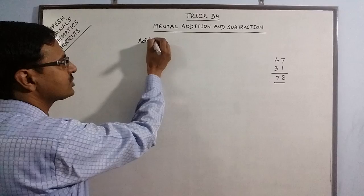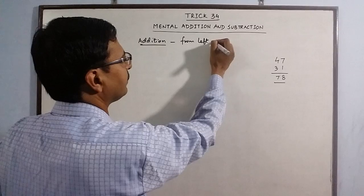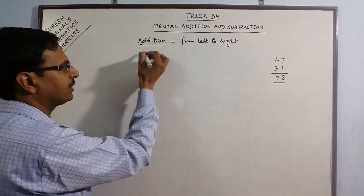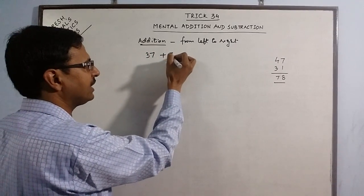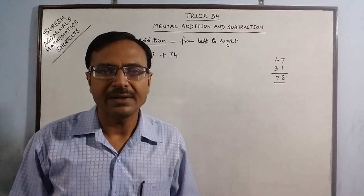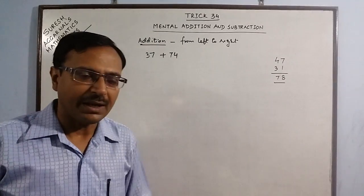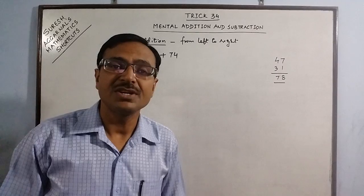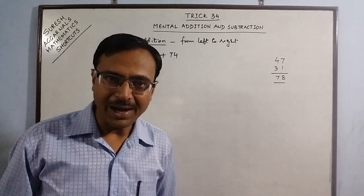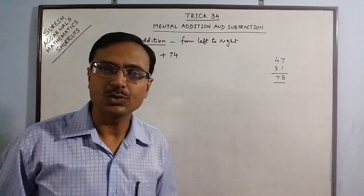To demonstrate this addition from left to right, I will take one example of two two-digit numbers. Say we have 37 and 74. Now 37 plus 74, traditionally when small children add this, they write it like this and they perform the addition starting from the right side and coming on to the left side. Now at the basic level, children have to be taught that they have to make use of round figures, and using the round figures they can calculate this within their mind only without the use of pen and paper.